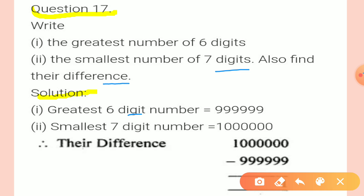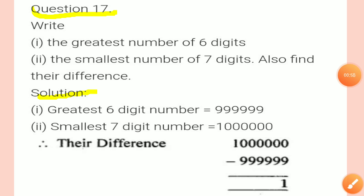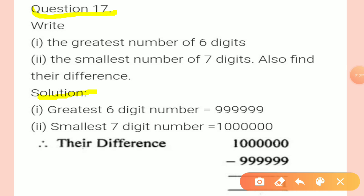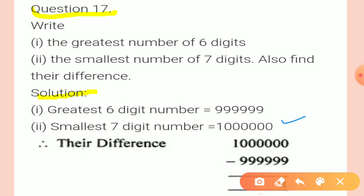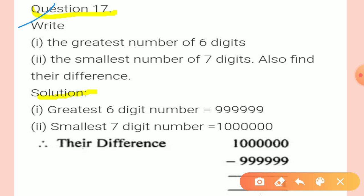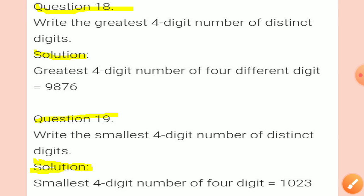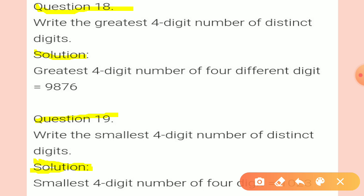To find the greatest six-digit number, repeat the digit 9 six times. Then to find their difference, since the smallest seven-digit number is larger than the greatest six-digit number, subtract the greatest six-digit number from the smallest seven-digit number. Question 17 solved. Now come to question 18.